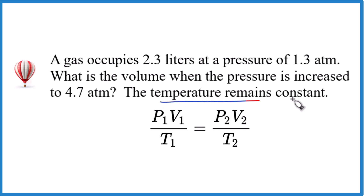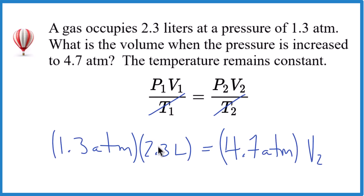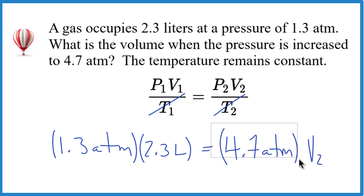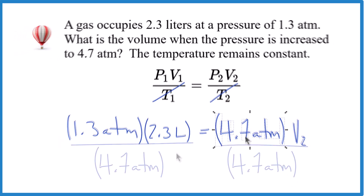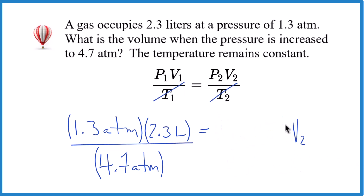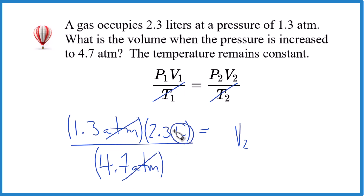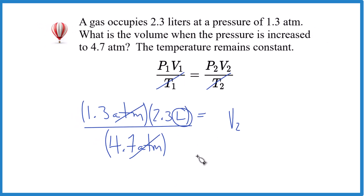We're told the temperature remains constant, so we can just ignore the temperature — now we just have Boyle's law. We have our initial pressure, our initial volume, our final pressure, and we're solving for V2. To get V2 by itself, let's divide both sides by 4.7 atm. This cancels out, and atmospheres in the numerator and denominator cross out, leaving us with liters. Multiply the top and divide by the bottom — that gives us V2 = 0.64 liters.